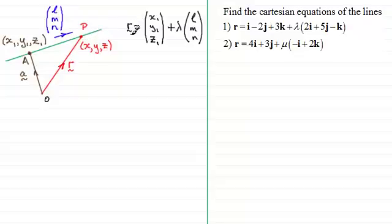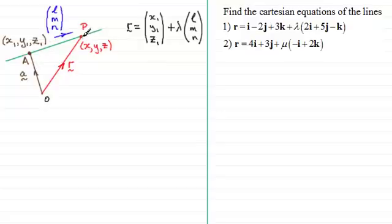So in other words, to find any position vector of any point on the line, R is equal to going up to the fixed point x1, y1, z1 with this position vector, and then going any amount — lambda, say — in the direction of this vector here. And it will take us to the point P. So that's just a brief recap then of the vector parametric form for the equation of a line.